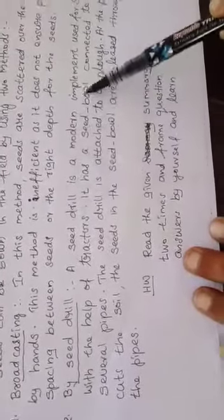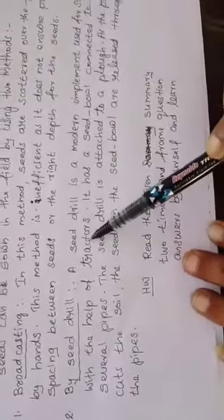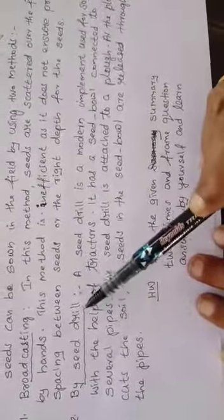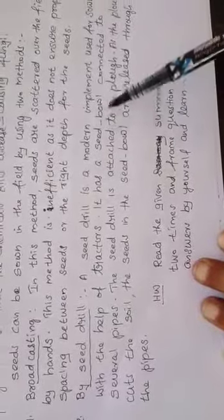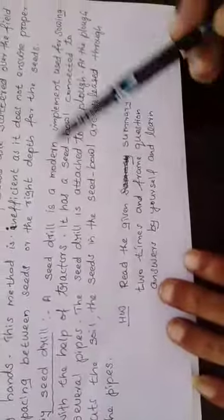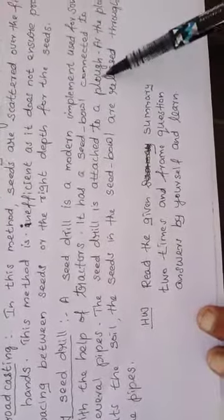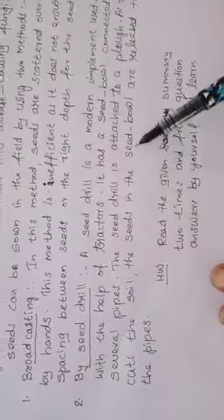Number two, by seed drill. A seed drill is a modern implement used for sowing with the help of tractors. It has a seed bowl connected to several pipes. The seed drill is attached to a plough. As the plough cuts the soil, the seeds in the seed bowl are released through the pipes.